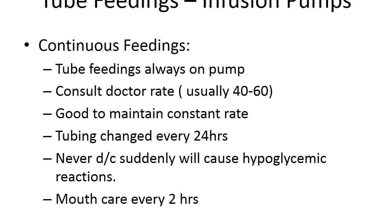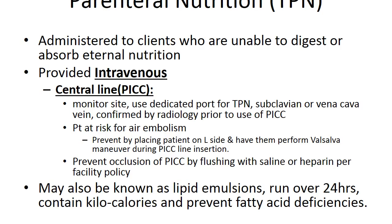For continuous tube feedings via an infusion pump, consult the doctor's order for the rate — usually between 40 and 60 milliliters per hour. Maintain a constant rate and change the tubing on the pump every 24 hours. Never discontinue a tube feeding suddenly, as this may cause hypoglycemic reactions. Provide mouth care to the client at least every two hours when on continuous tube feedings.